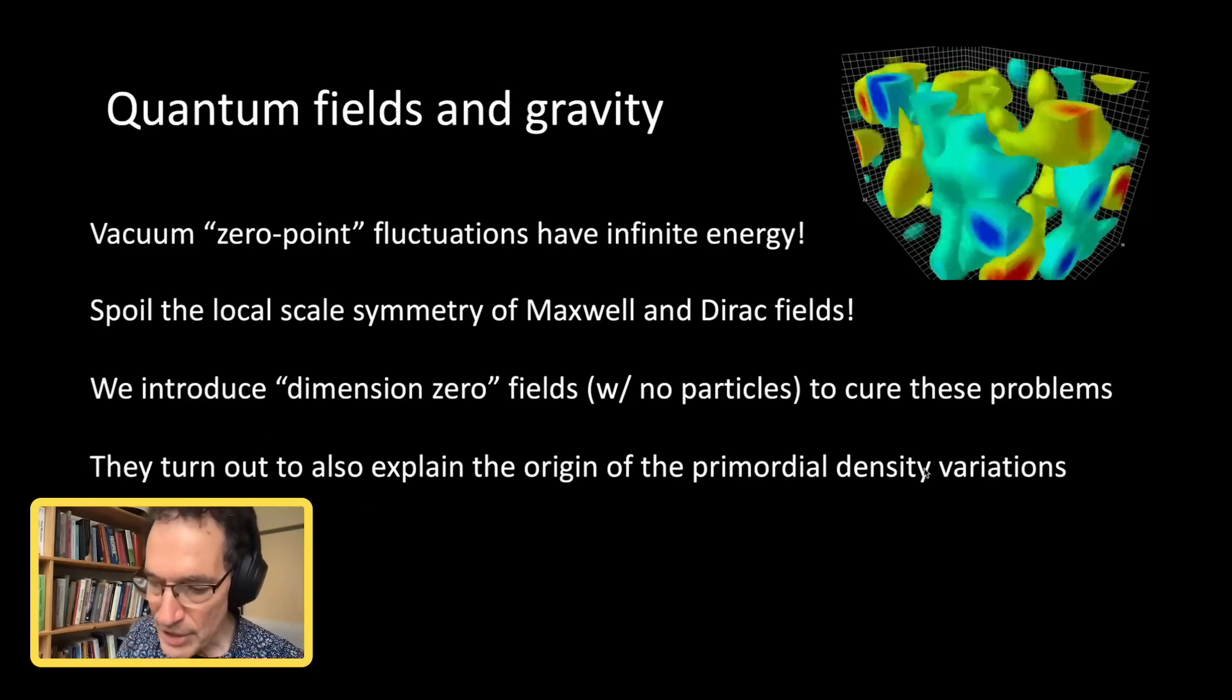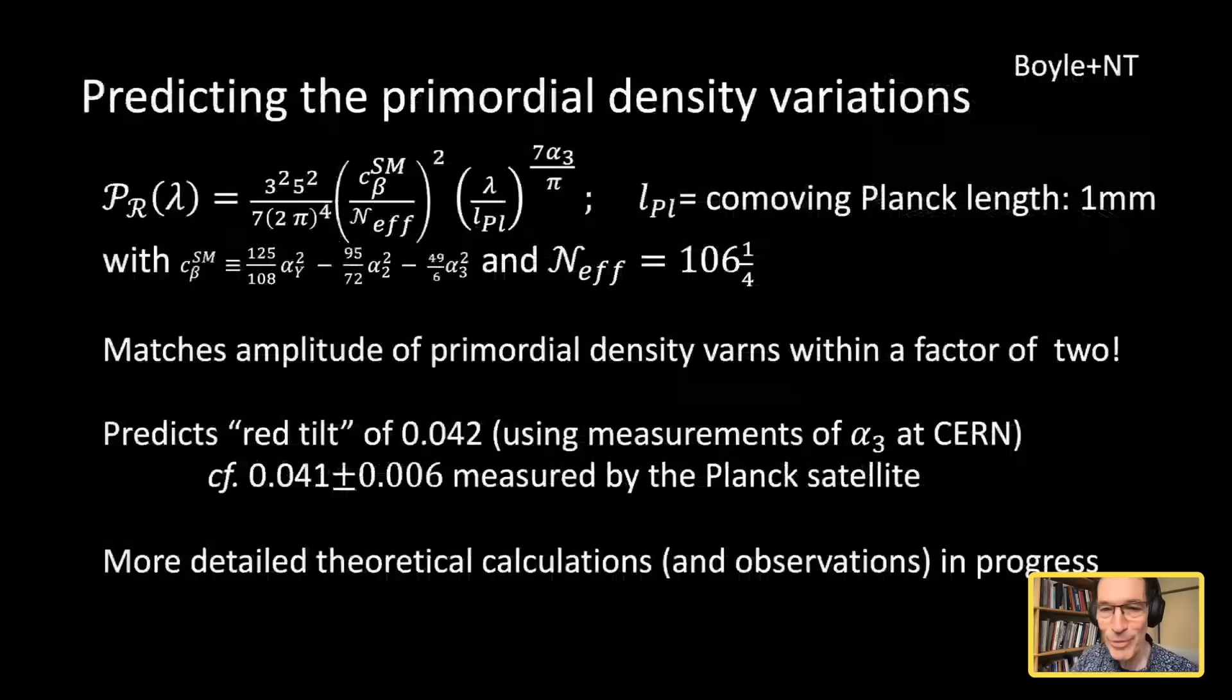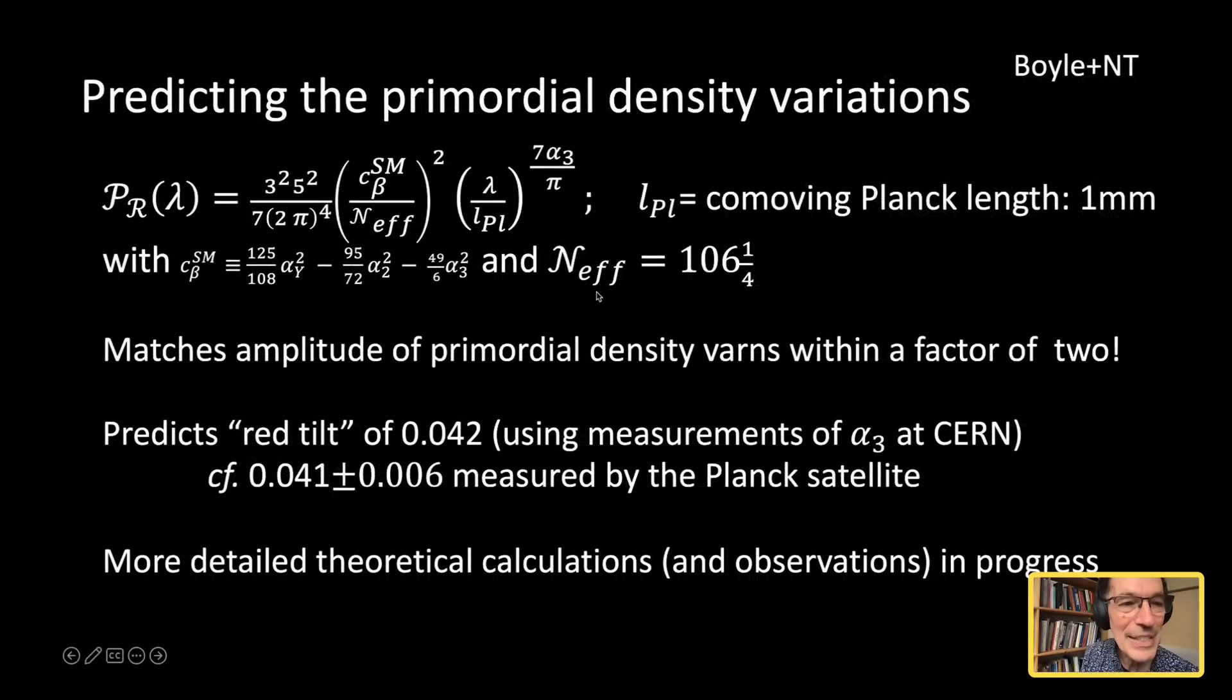And so this is now rather technical. I'm going to leap to a formula, which I'm not going to justify. But this formula is a direct consequence of the assumptions I've laid out. It says that the power spectrum in the early universe, that's this curly P thing, as a function of wavelength, is given by these numerical factors, which are just a consequence of relativity, quantum mechanics, quantum field theory. Various numbers here, C beta, this alpha-y, alpha-2, and alpha-3...